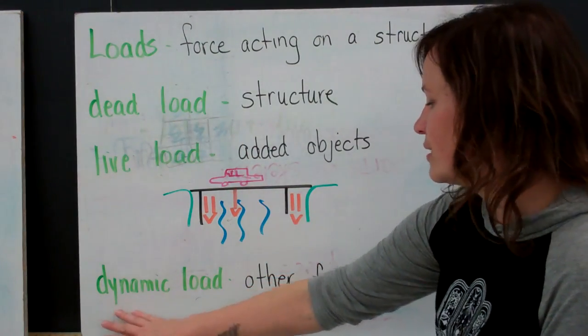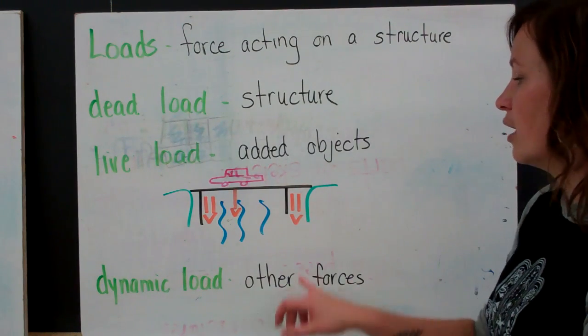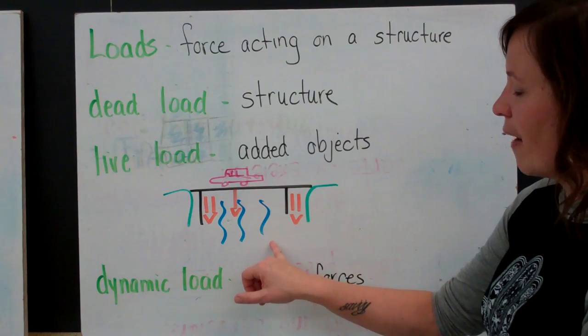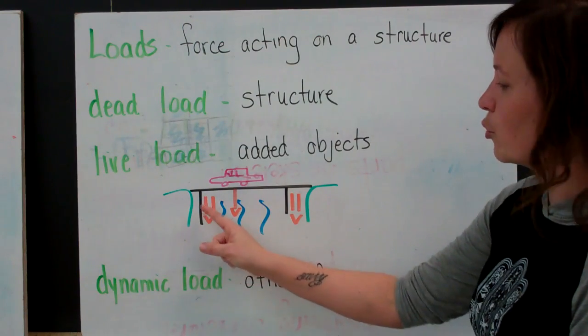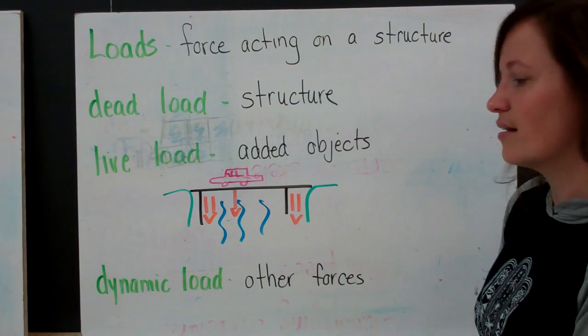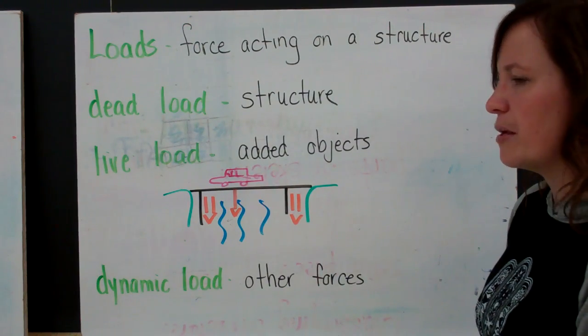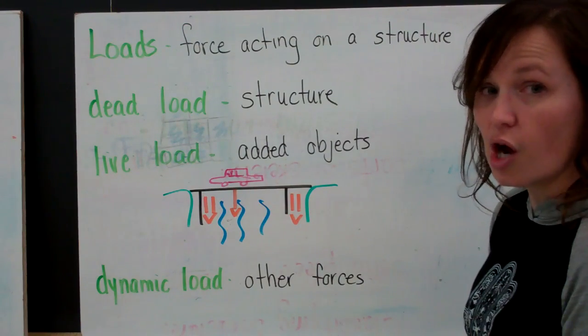There's also a dynamic load. And these are forces other than gravity that are acting upon a structure. In this diagram here, that would be an example of the water. So the water rushing by the base of this structure is another load that it has to be able to hold. So it could be things like water, wind, or snow.